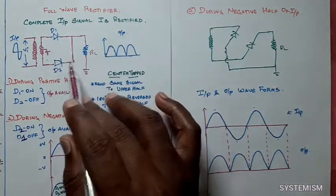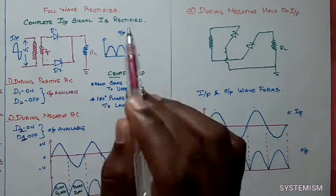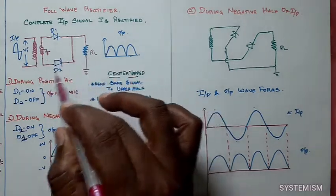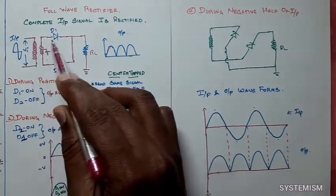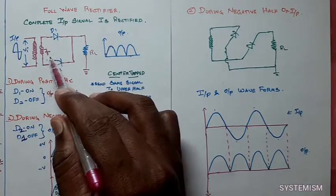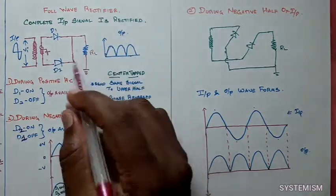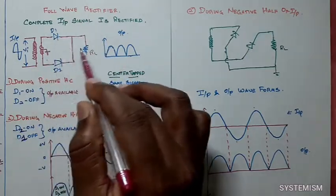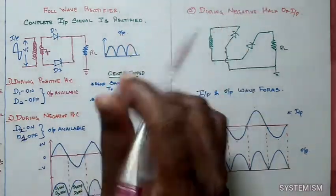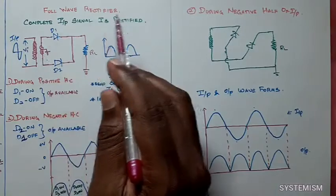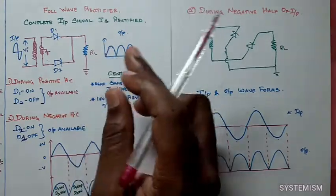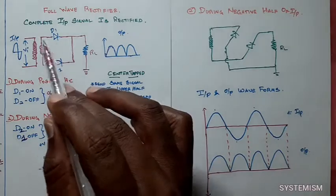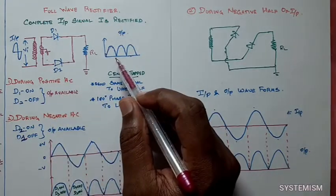Why did we move from normal full wave rectifier to bridge rectifier? In a normal full wave rectifier, the center tap transformer we are using is big in size. Due to this, we cannot fabricate this normal full wave rectifier in small circuits — it cannot be converted into IC form. So that is why we changed from full wave rectifier to bridge rectifier.